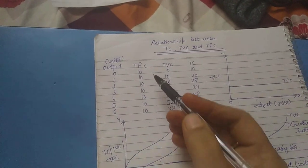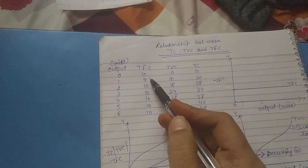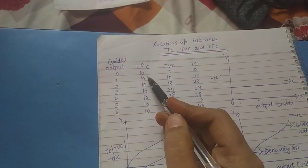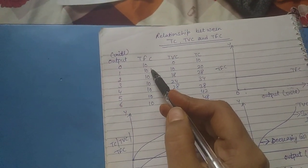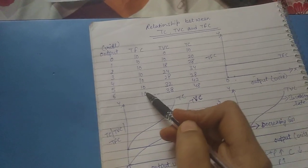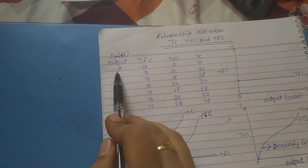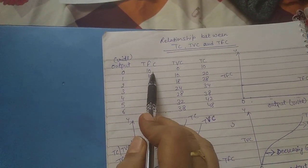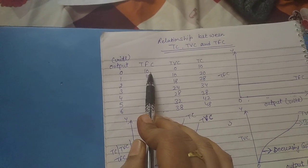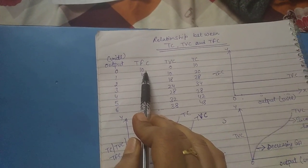Four unit, five unit, six unit — whatever output he is producing, the total fixed cost remains the same. Even when the output is zero, total fixed cost is still there — it is 10.